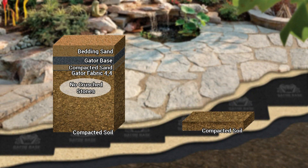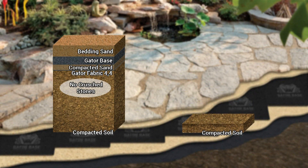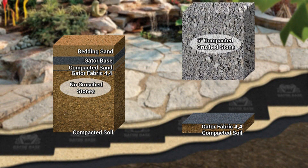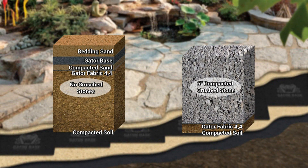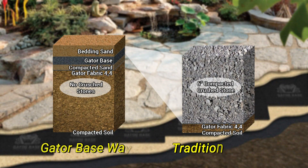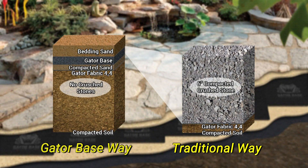Traditional way: cover the foundation inside with Gator fabric GF 4.4 and fill and compact the excavated area with 6 inches minimum of crushed stone. One Gator base replaces a whopping 6 inches of compacted crushed stone. Gator base makes you save on excavation and labor — what a saving!